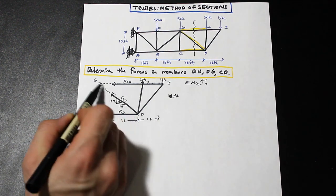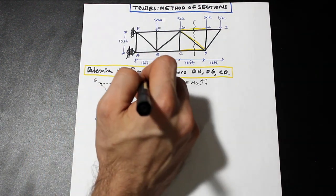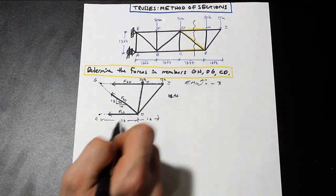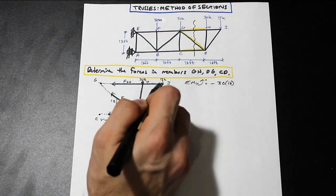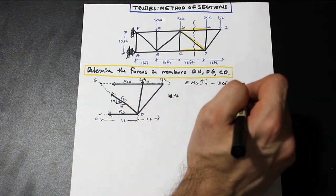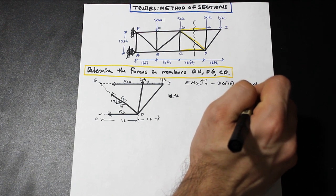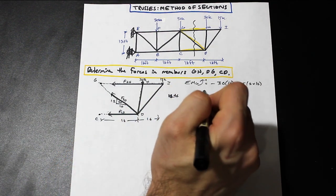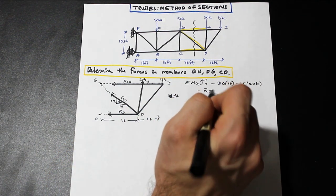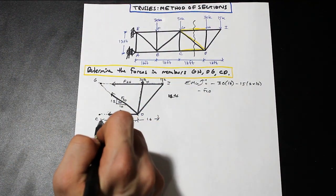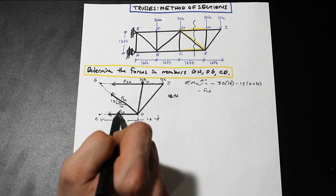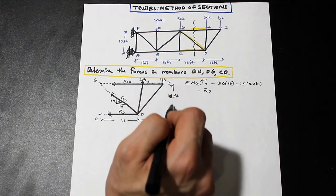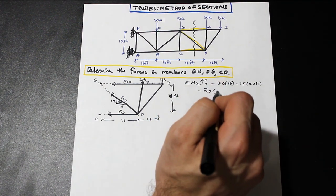Okay, so let's take the moment about G. So FGH and FGD don't have any moment here. We do have 30 kip force. That's acting clockwise, so that's going to be negative. We have 30 times 16 feet. We have 15 times 16 plus 16, and that's going to be negative again. And finally we have our FCD, which is also negative. I'm just going to bring it down here. So we have FCD, and that is going this way. Opposite of our sign convention, so it's negative. And FCD is times this moment arm here, so it's the vertical distance, which is 12 feet.